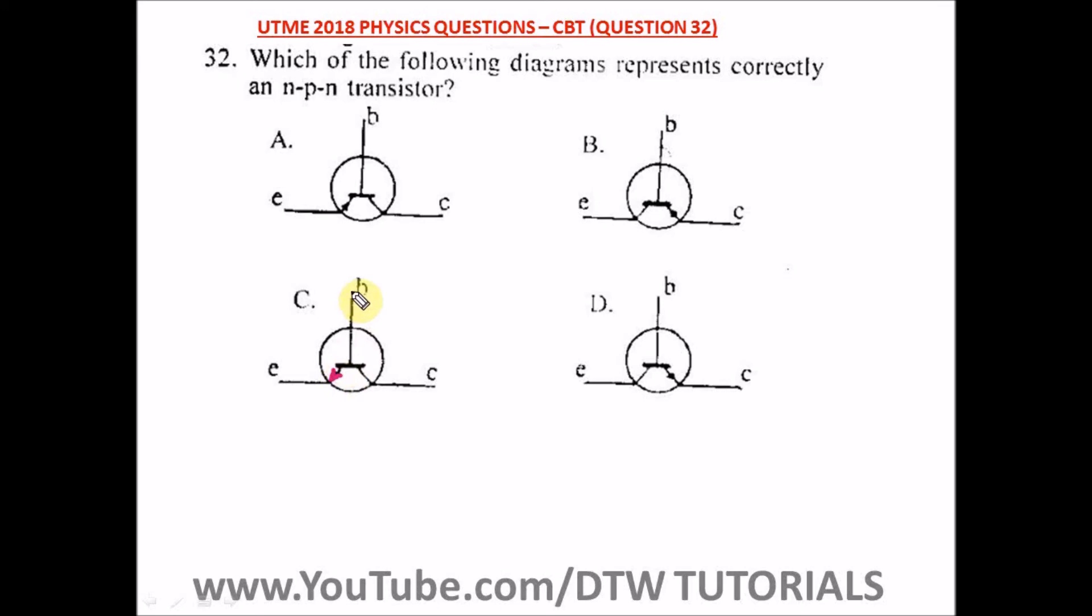the arrow here which means the base-emitter junction is forward biased. So our correct option here is option C.